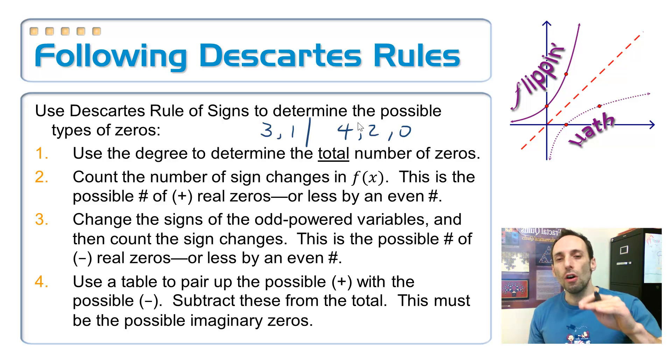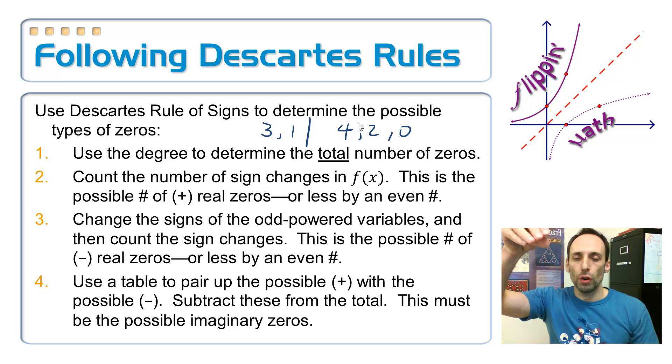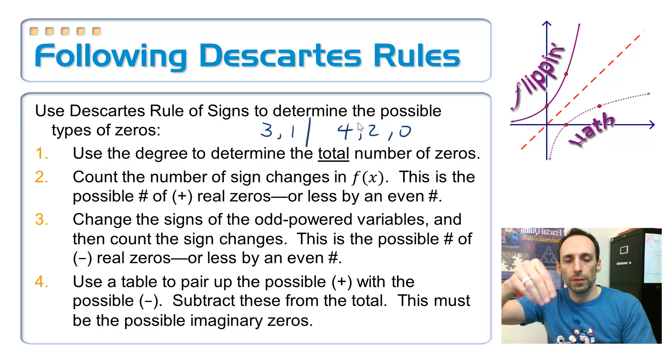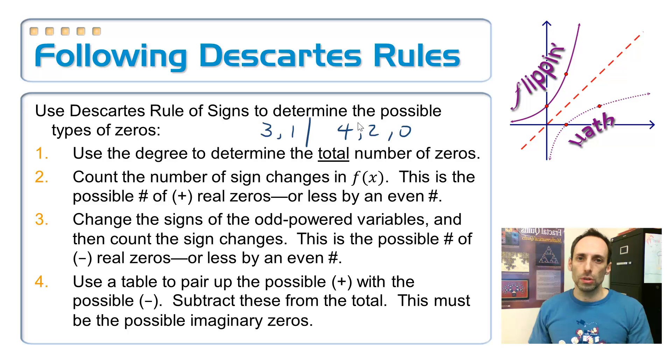Step three, do the same thing on f of negative x. To find f of negative x is so easy. All you've got to do is go through and change all the signs of the odd-powered terms. Very, very simple. And then do the same thing. Count up all your sign changes, write that number down, and then take away two until there's nothing left. Step number four, pair these things up in a table. Pair up some of your positives with the negatives, and then add those two together, subtract it from the total, and see how many imaginaries you can get from that.